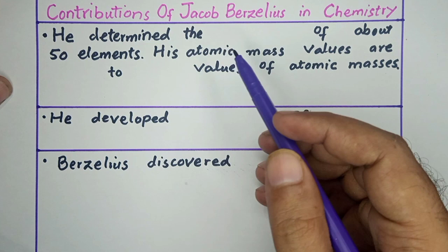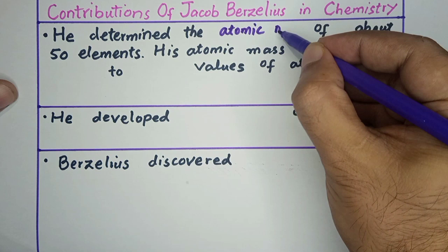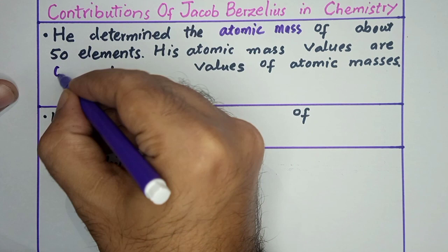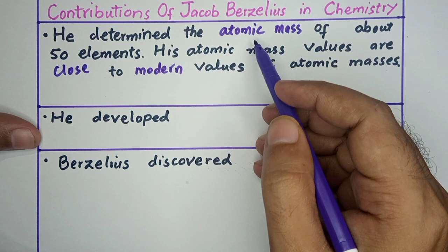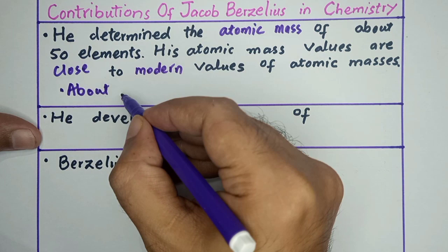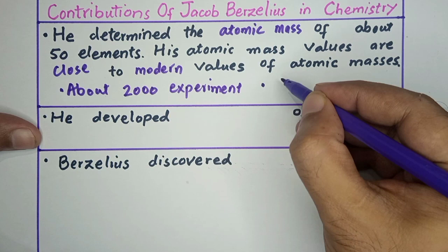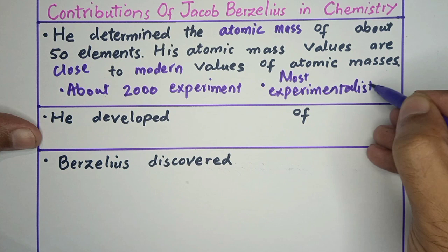What are the contributions of Jacob Berzelius in chemistry? He determined the atomic masses of about 50 elements, and his atomic mass values are close to modern values. For this, he conducted about 2000 experiments. This is why Jacob Berzelius is said to be the most experimentalist chemist.